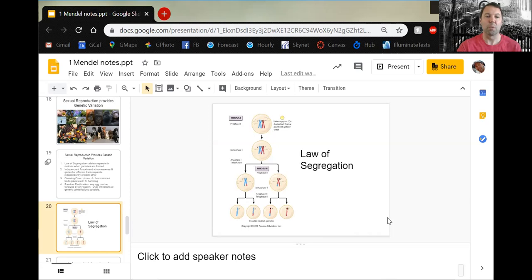Number two, independent assortment. This one was in section two. This is the idea that genes for different traits are going to segregate independently. Most genes travel independently of each other. Even if they're on the same chromosome, they're not going to be linked. There are a few special cases you could learn about in college where the genes are linked, but most of the times they are not.